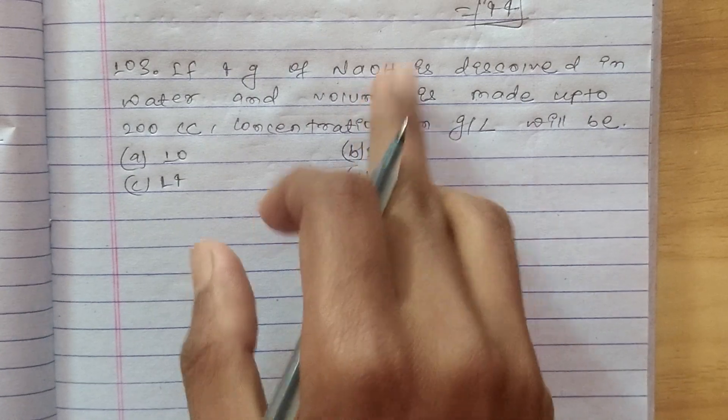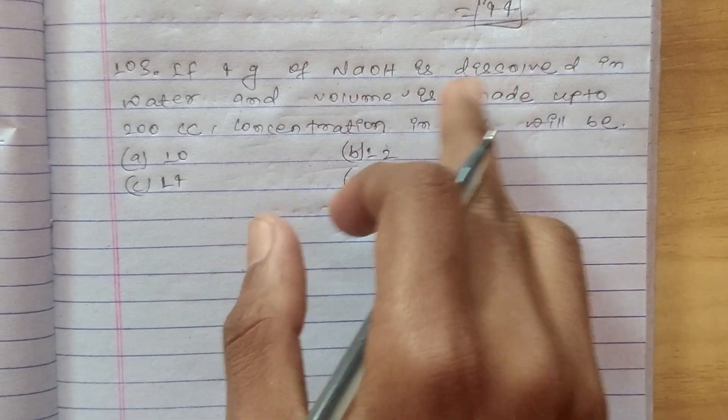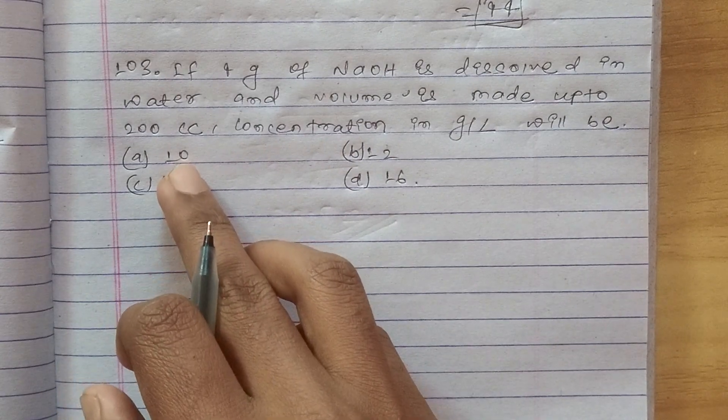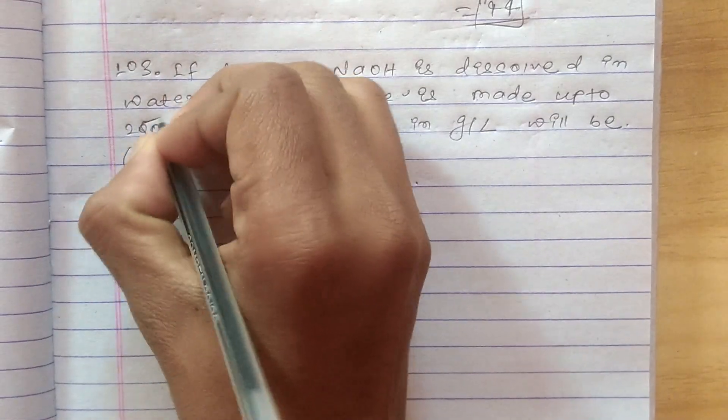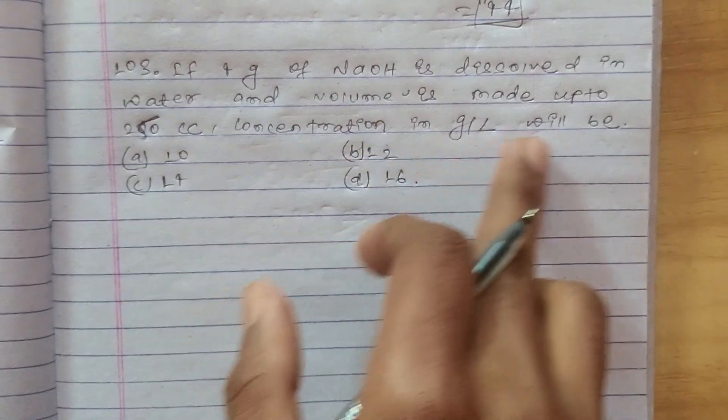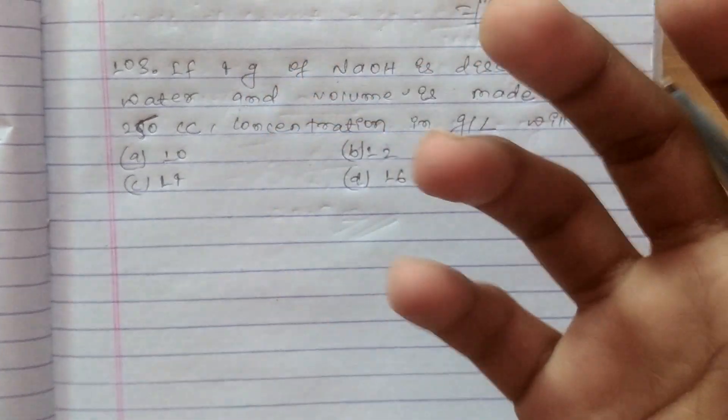If 4 grams of NaOH, that is sodium hydroxide, is dissolved in water and volume is made up to 250 cc, the concentration in grams per liter will be - gram per litre maya is concentration kothi huncha.